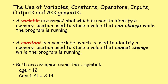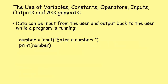Both variables and constants are assigned using the equal symbol - for example: age equals 12 for a variable, and const PI equals 3.14 for a constant. Typically constants have 'const' at the start in the exam. We can input data using a simple input command, such as: number equals input("enter number"), and then output that value.